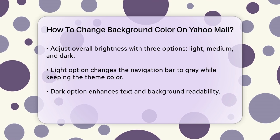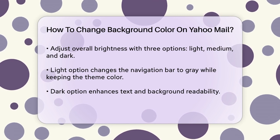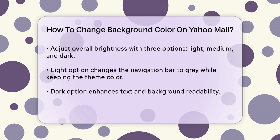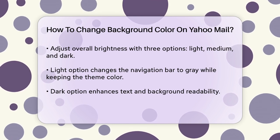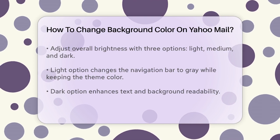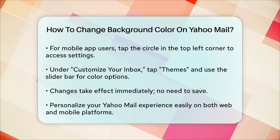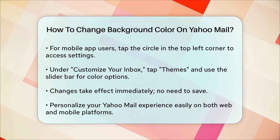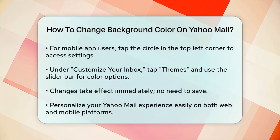To make these changes on the Yahoo Mail mobile app, the process is similar but slightly different. Open the app on your Android or iOS device, tap the circle in the top left corner, and then tap Settings. Under Customize Your Inbox, tap on Themes and use the slider bar to choose from 13 different color options.